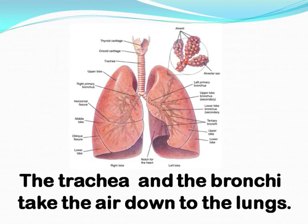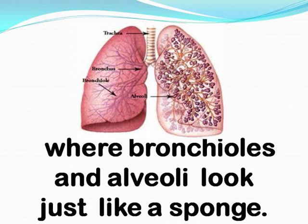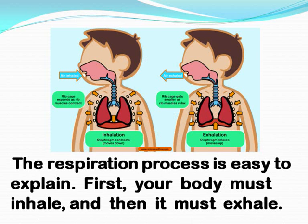The trachea and the bronchi take the air down to the lungs, where bronchioles and alveoli look just like a sponge. The respiration process is easy to explain.